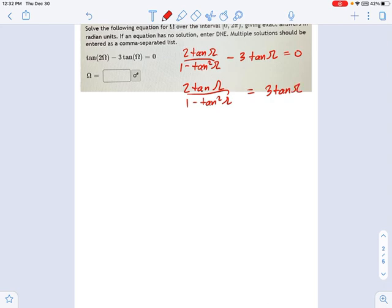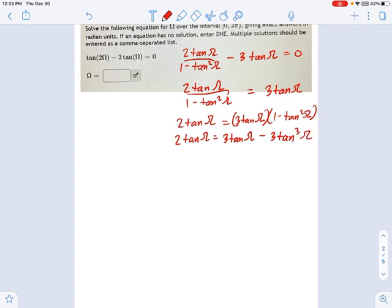And now it's a fraction. I don't want it to be a fraction because I can't solve it until it's just a regular single line equation. So I'm going to say 2 tangent omega equals 3 tangent omega times 1 minus tangent squared. I multiplied both sides of the equation by the denominator. And now I get what? Let's break this multiplication open here. So 3 tangent times 1 is just 3 tangent and minus 3 tangent cubed omega.